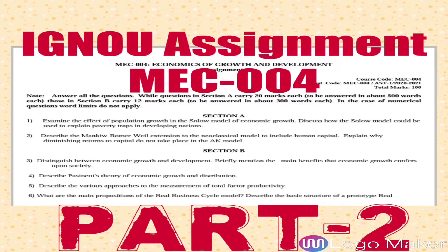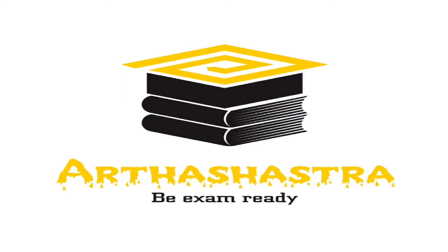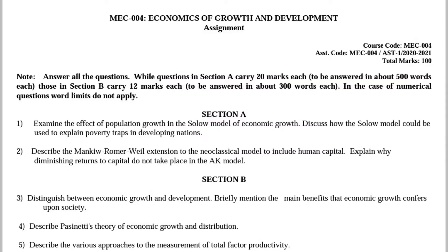Hello everyone, welcome to Earth Shasta Classes. In this video we are going to present the answer to the second question of the assignment that goes like this: Describe the Mankiw-Romer-Weil extension to the neoclassical model to include human capital. Explain why diminishing returns to capital do not take place in the AK model.